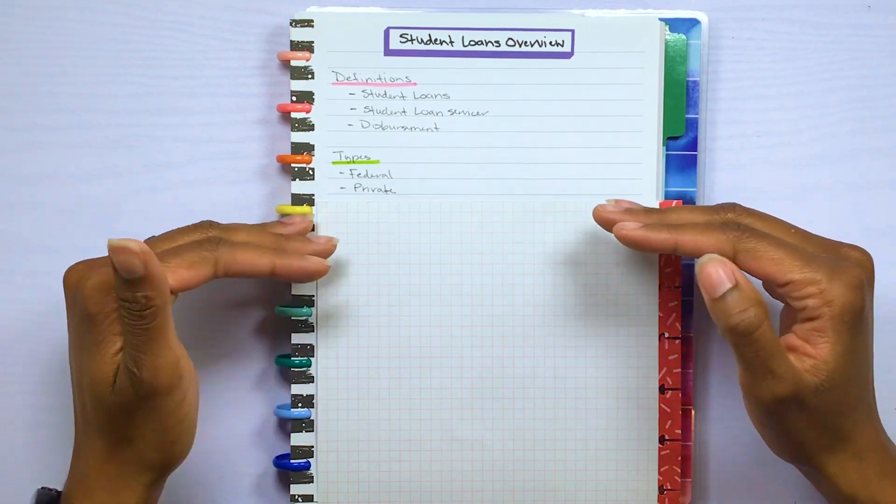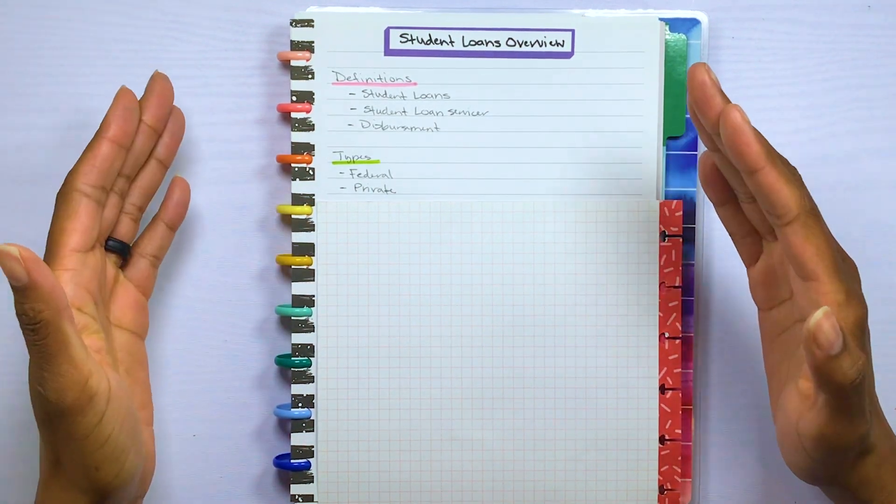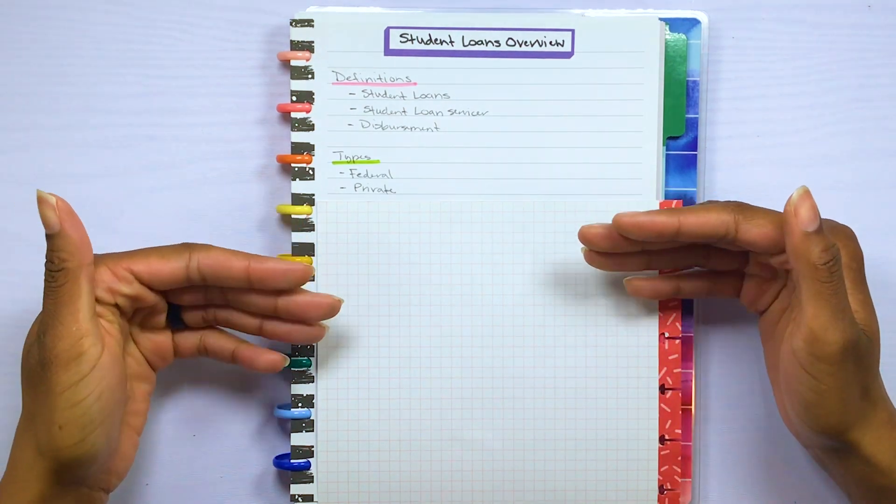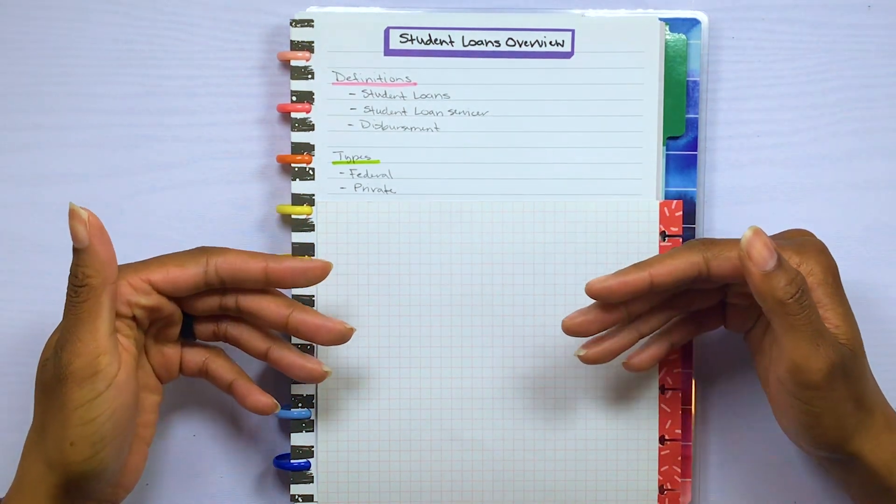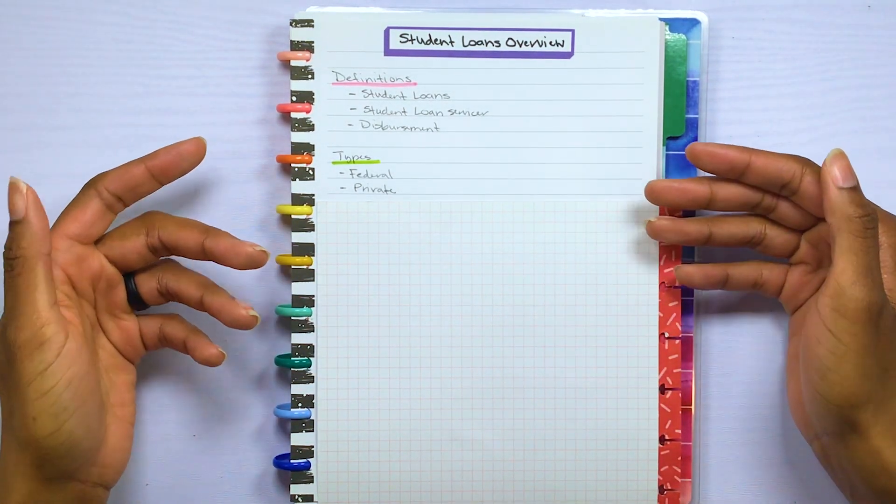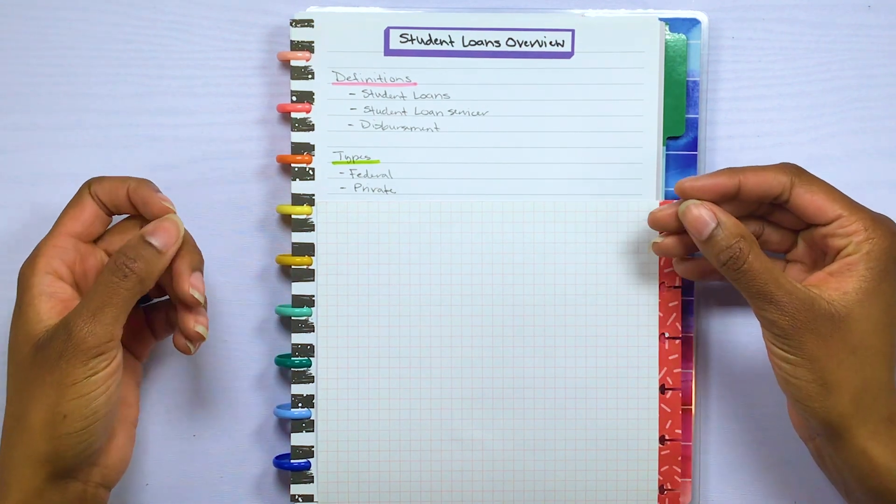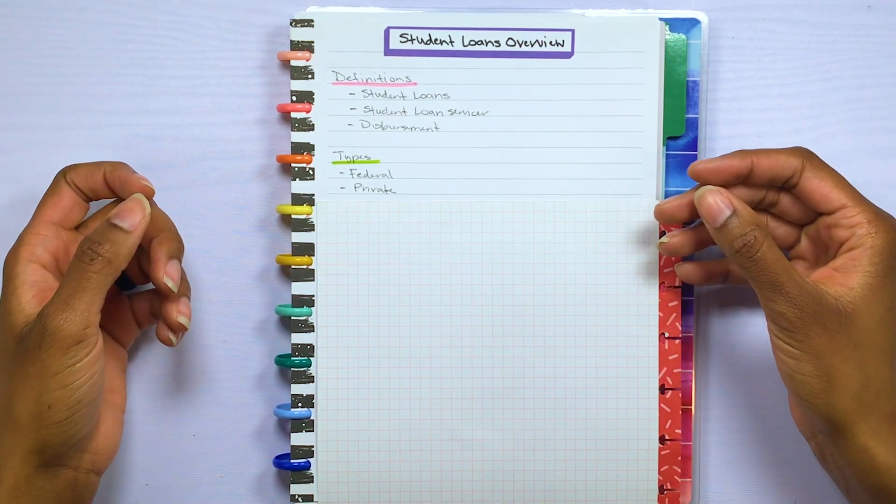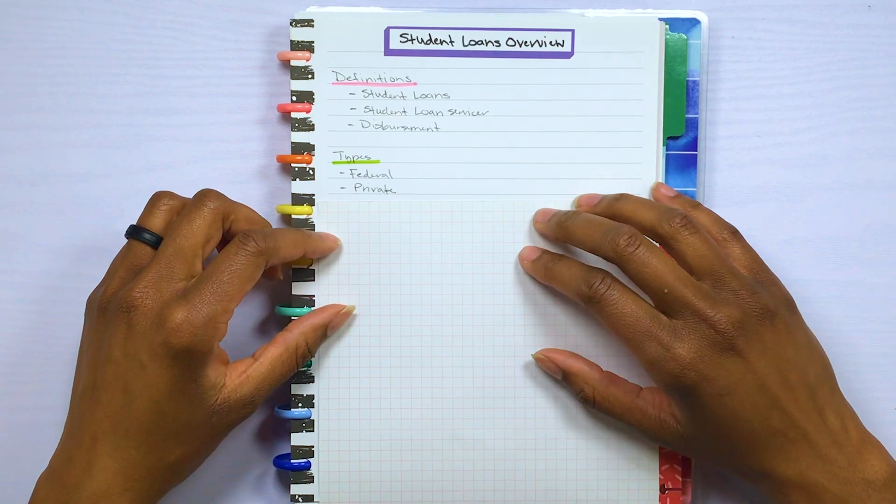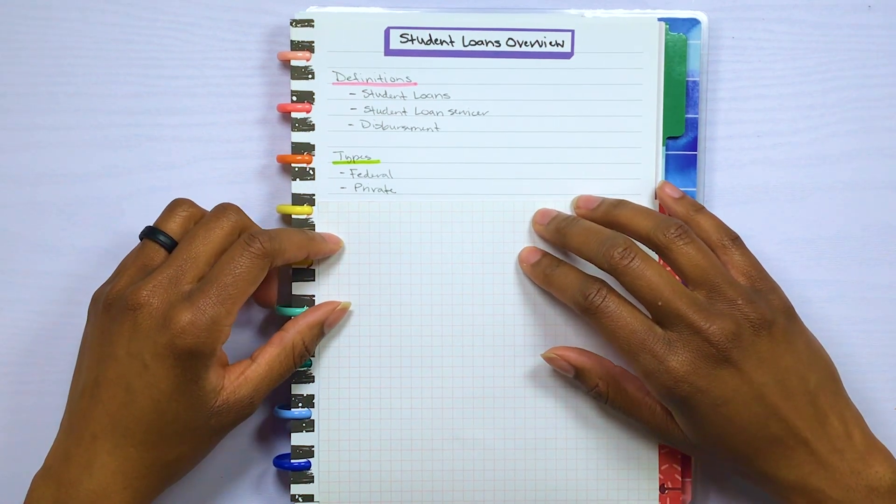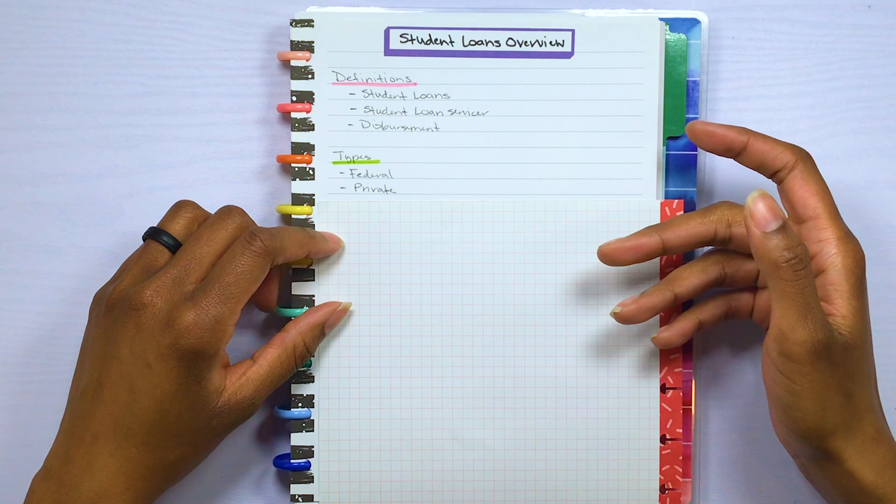So that's as far as I'm going to go on diving into the types of the loan. So I suggest that if you're offered any student loans that you do your research on the type of loan that you're offered, as there can be advantages and disadvantages to each type depending on your situation.